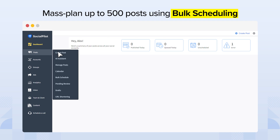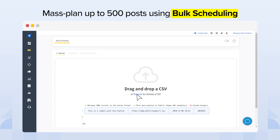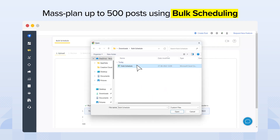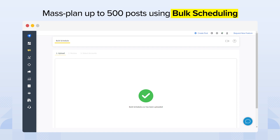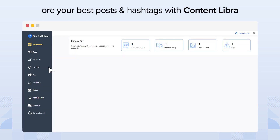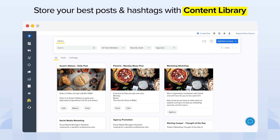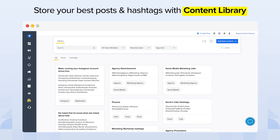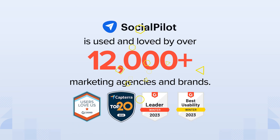Mass plan up to 500 posts or tweets with text and images using bulk scheduling. Create and save your best posts and hashtags in our content library. SocialPilot is used and loved by over 12,000 marketing agencies and brands across the globe.